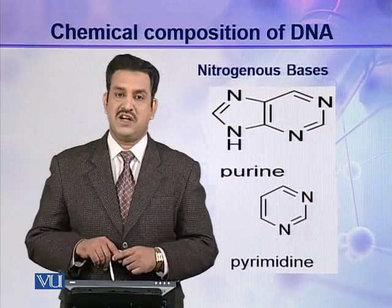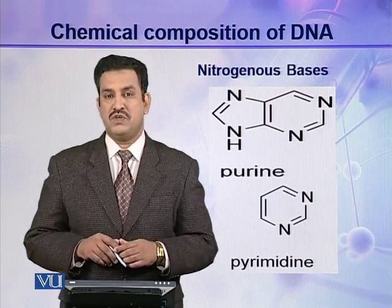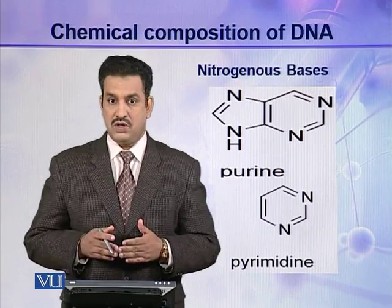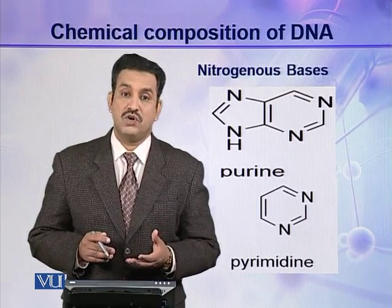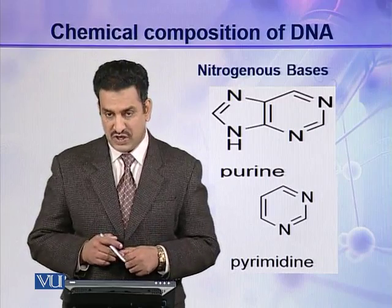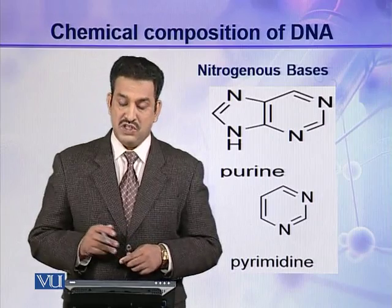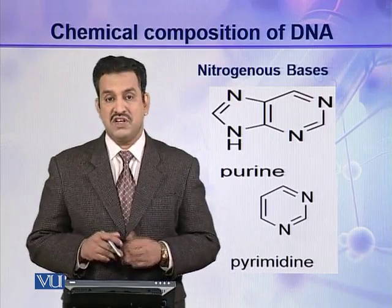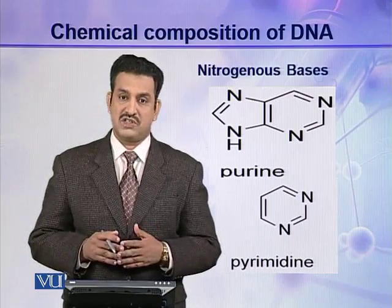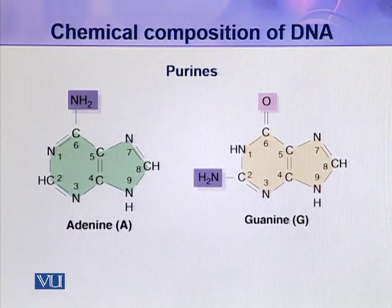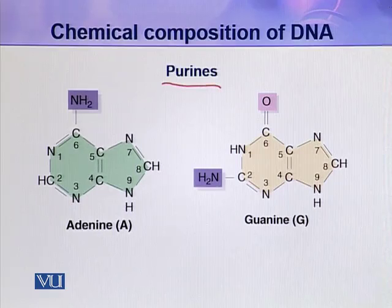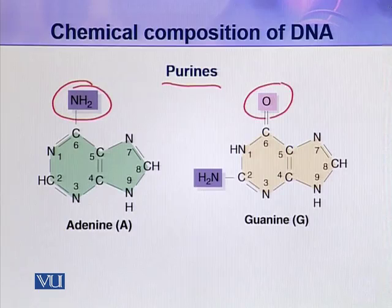The second component is the nitrogenous base. Four different types of nitrogenous bases are present in a DNA molecule, and they are derived from two parent compounds: purines and pyrimidines. Adenine and guanine are derived from the parent compound purine — these two are purines. Look at the pictures; there are only minor differences between them, for example the differences lie at specific positions.